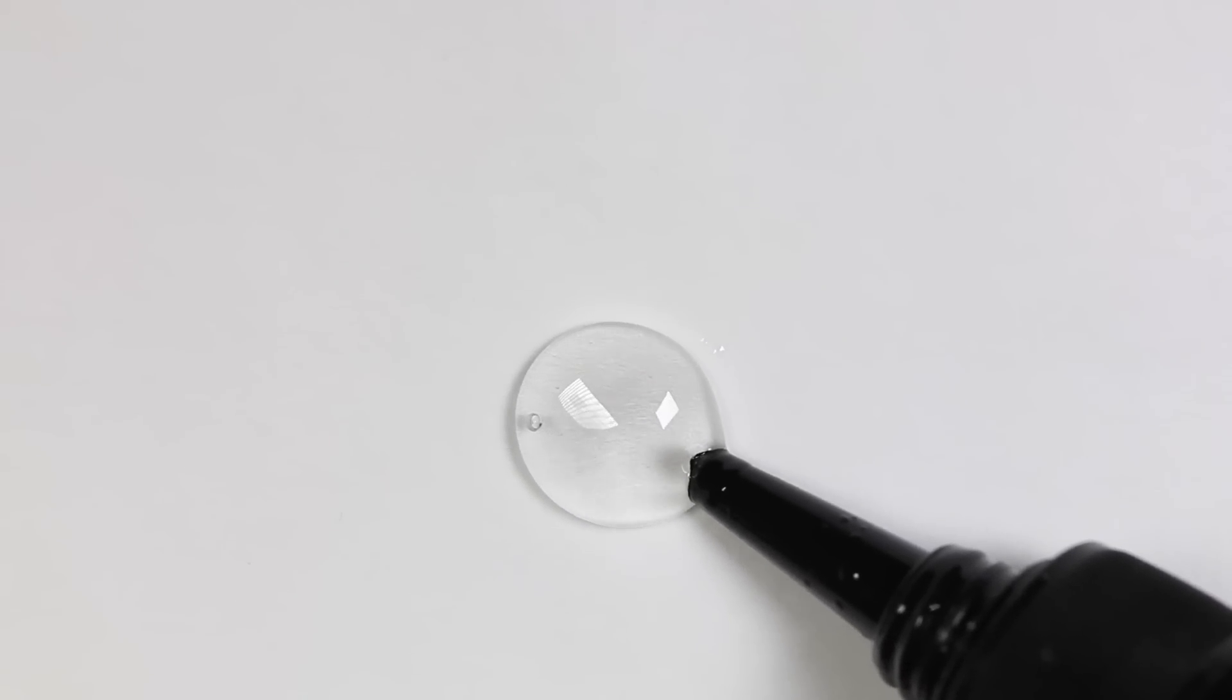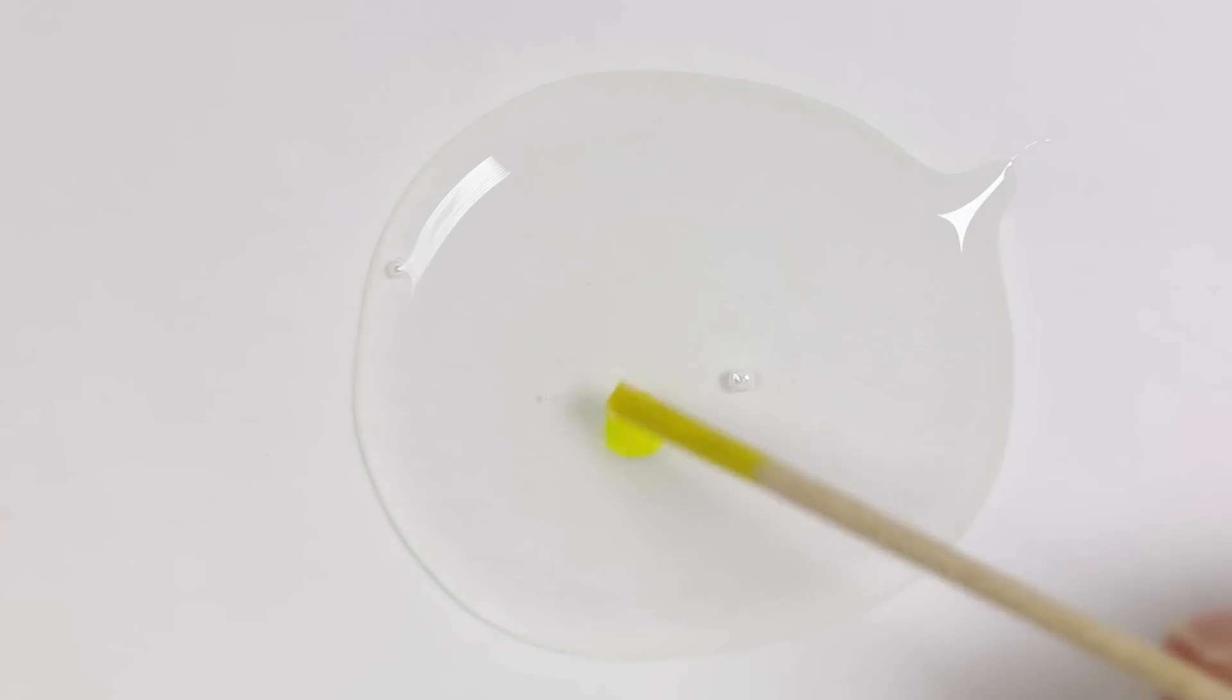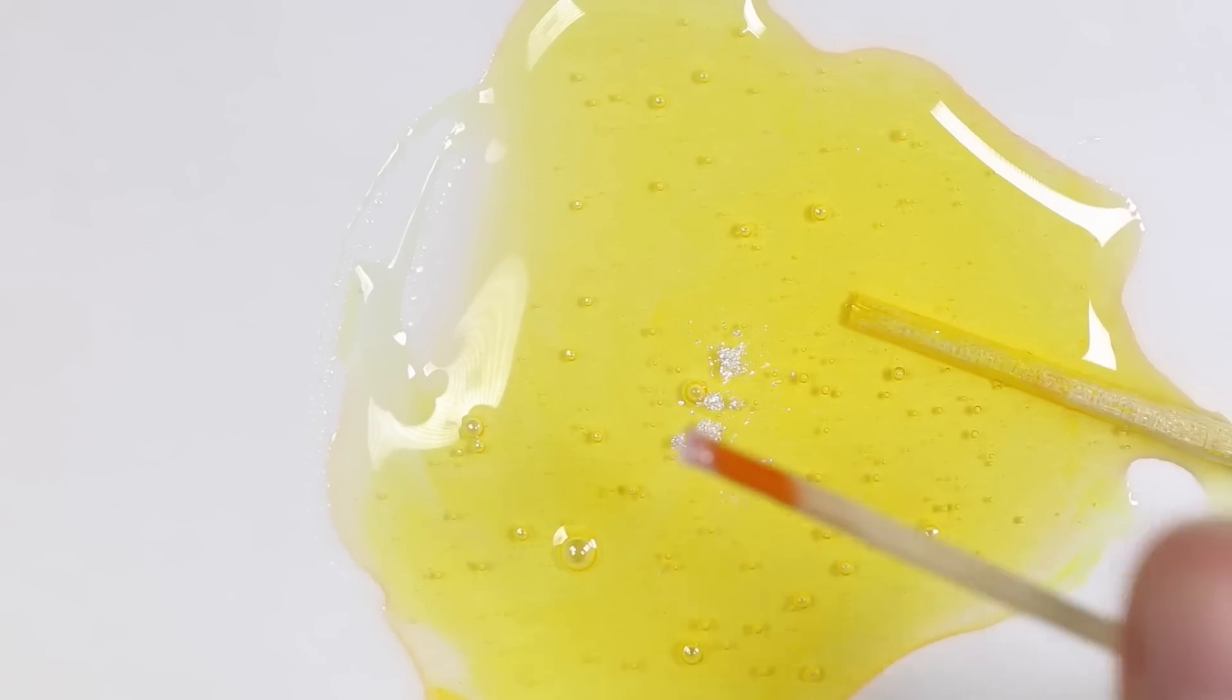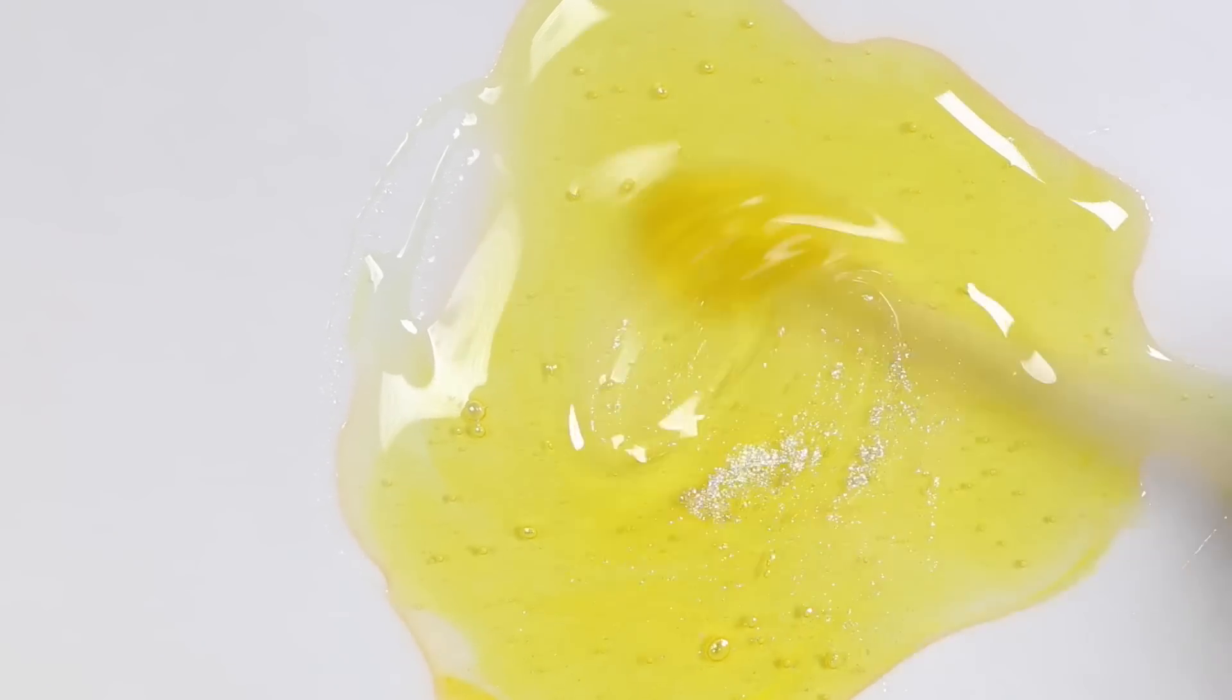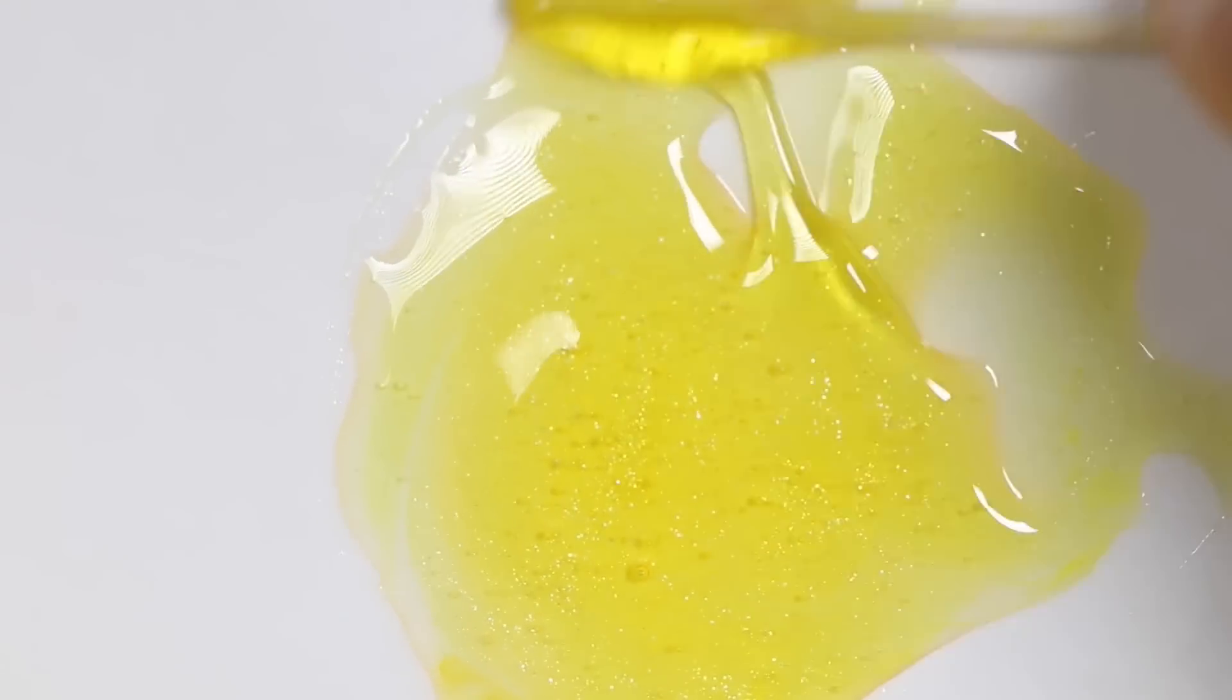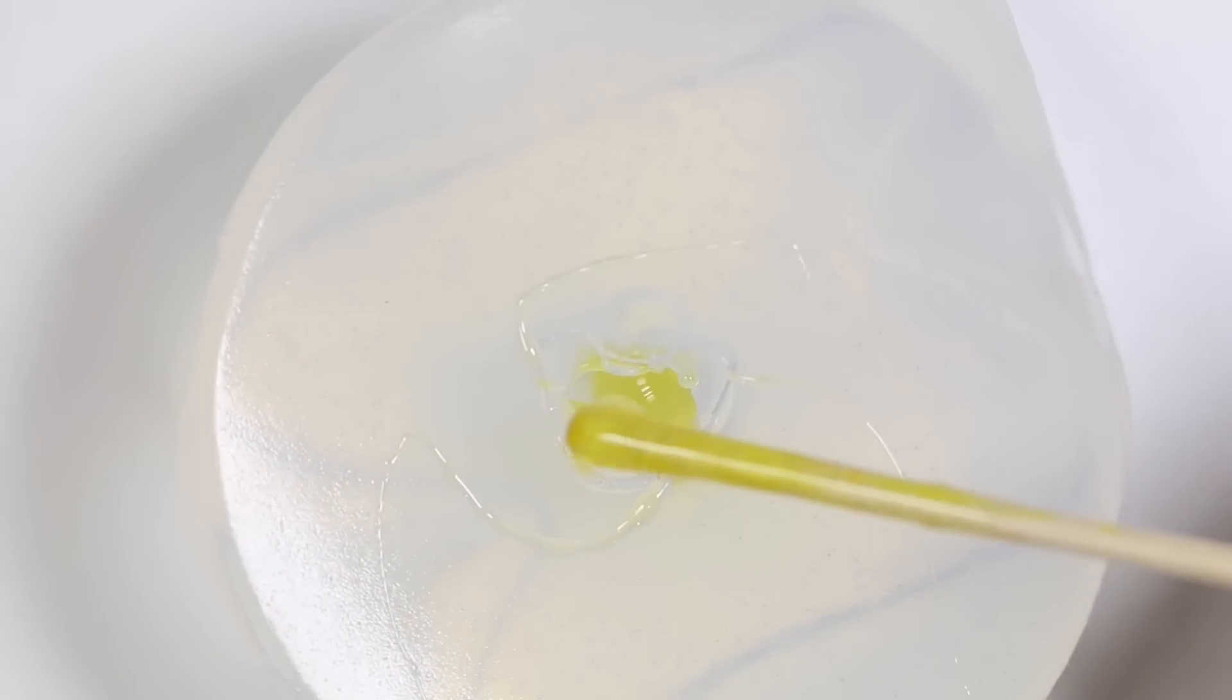And now that we have our mold, we can now fill it up with some resin. And I'm dyeing the resin a little bit of yellow, a little bit of orange, and a little bit of pearl. Then I'm filling up my mold with the yellow resin that we made, filling it all the way to the top and letting that cure.